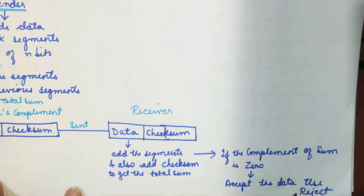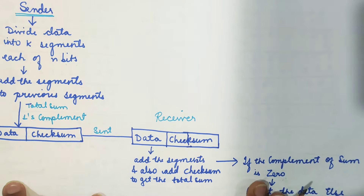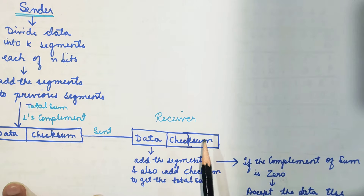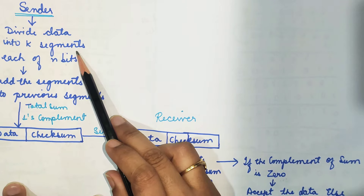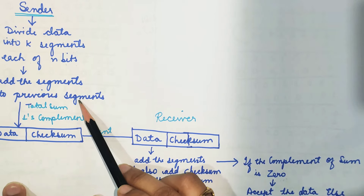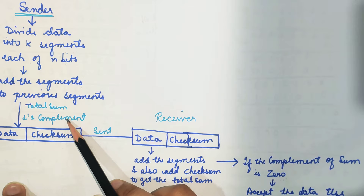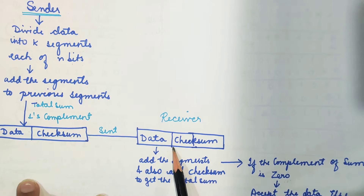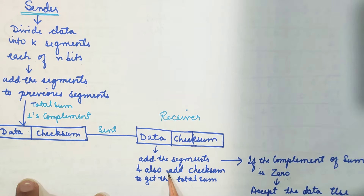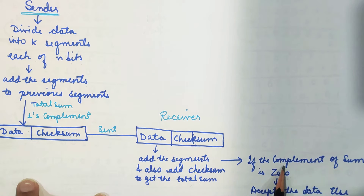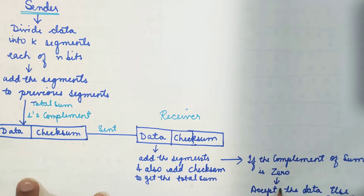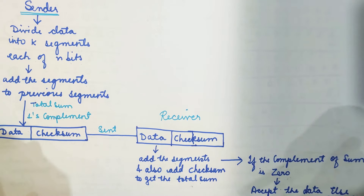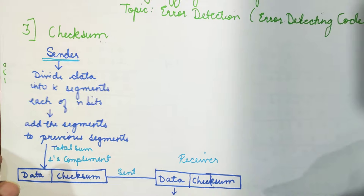If there is any slight change, or we are getting bits other than zero, then we say it is containing an error. So we have to remember: if the complement of the sum is zero, we accept the data — there is no error. If there is an error, we reject the data. Simply, we divide the original data into K blocks or segments, add them one by one, take the complement of the sum to get the checksum, append the checksum to the original data, and send that complete block. The receiver repeats the same procedure, also adding the checksum to the segments to get the total sum, then complements it — if zero, accept; else reject.